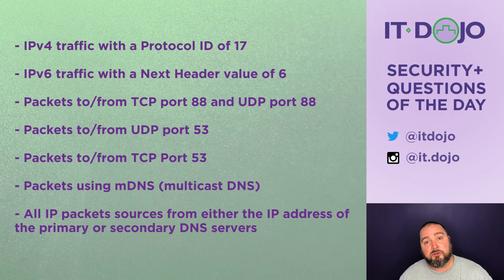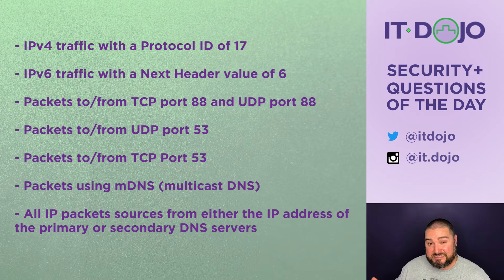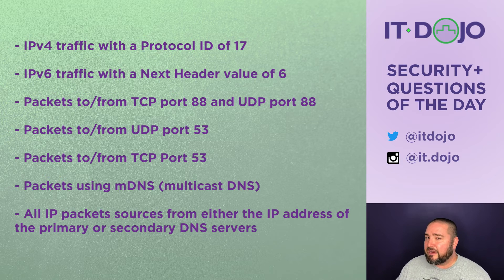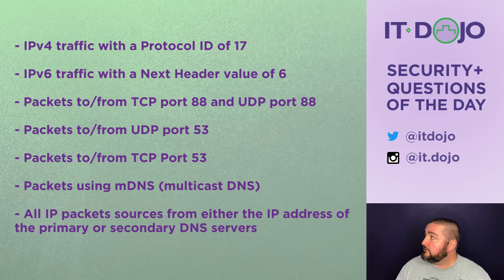Similarly, the second option says to configure your IPv6 access control list to allow anything with a next header field of 6. That would be inaccurate because a next header value of 6 is TCP, not a DNS-specific rule. The question also says nothing about whether this is IPv4 or IPv6, so we won't read into that. The third choice says to enable both TCP and UDP port 88 — but those ports are associated with Kerberos, not DNS. So that's not the right answer either.